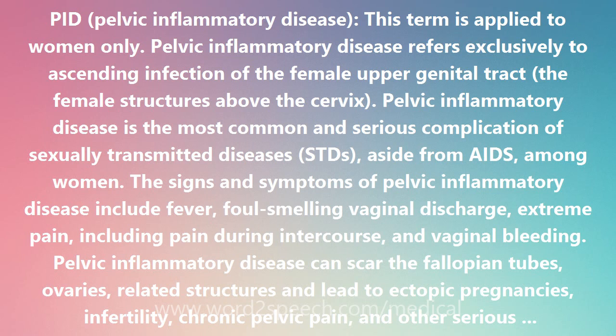Pelvic Inflammatory Disease can also lead to other serious consequences. The infectious microorganisms migrate upward from the urethra and cervix into the upward genital tract. Many different organisms can cause Pelvic Inflammatory Disease, but most cases are associated with gonorrhea and genital chlamydial infections — two very common STDs.